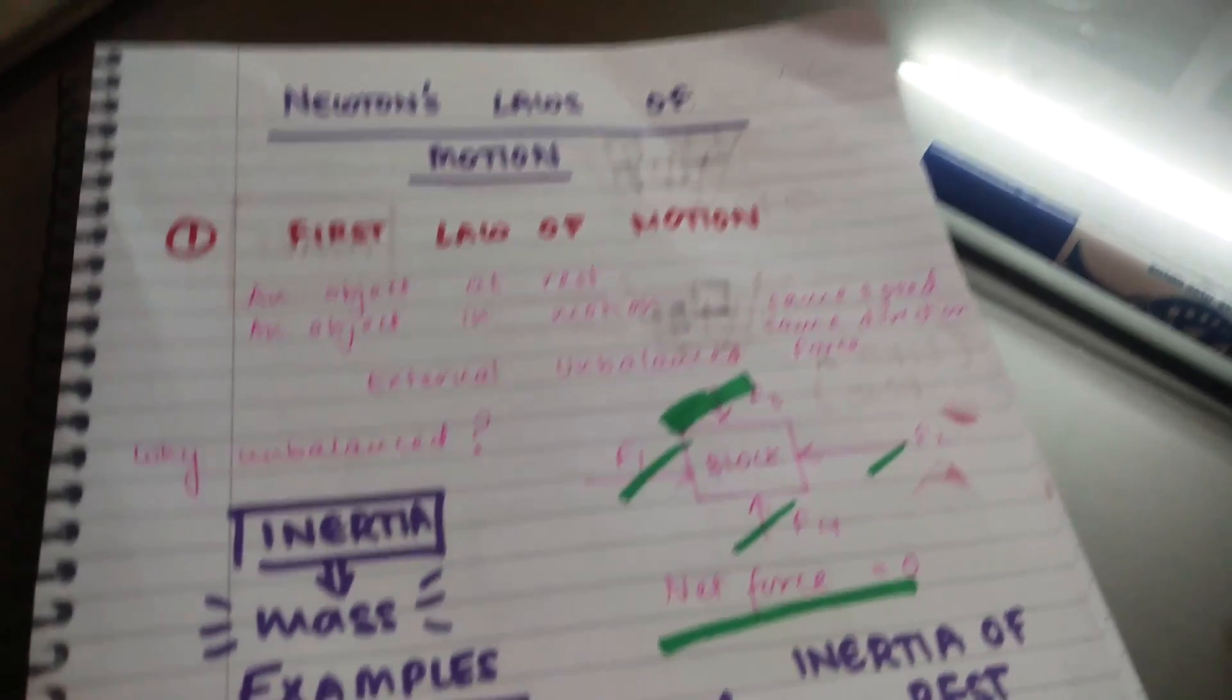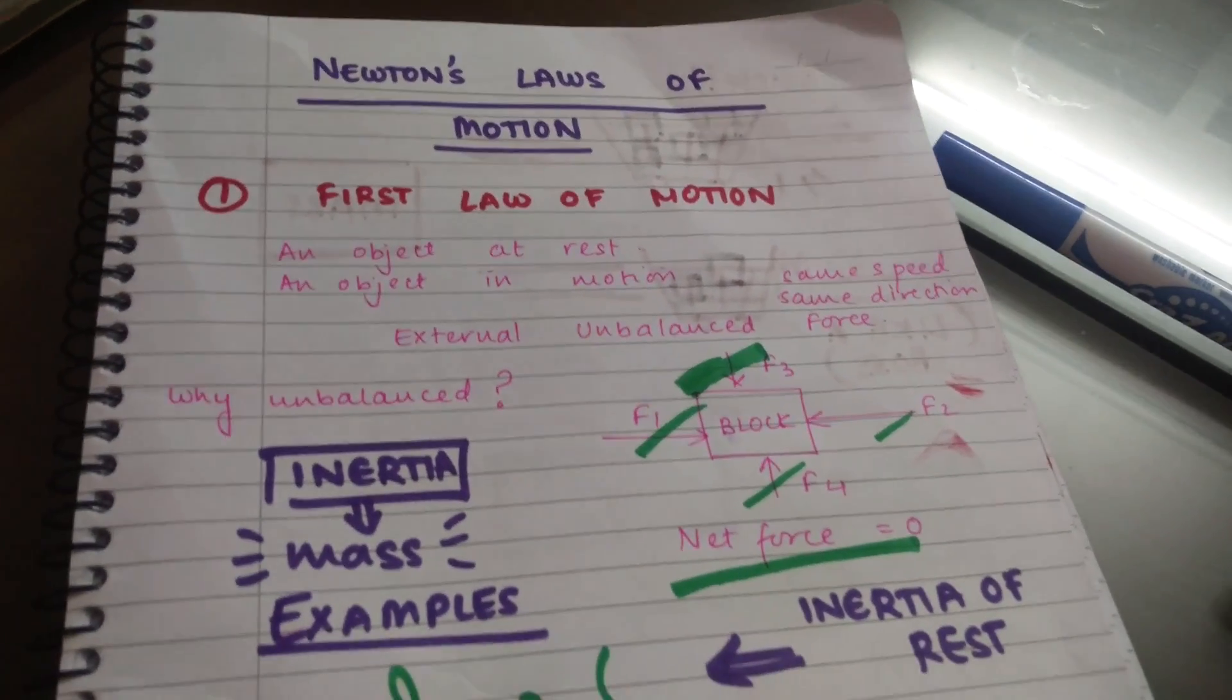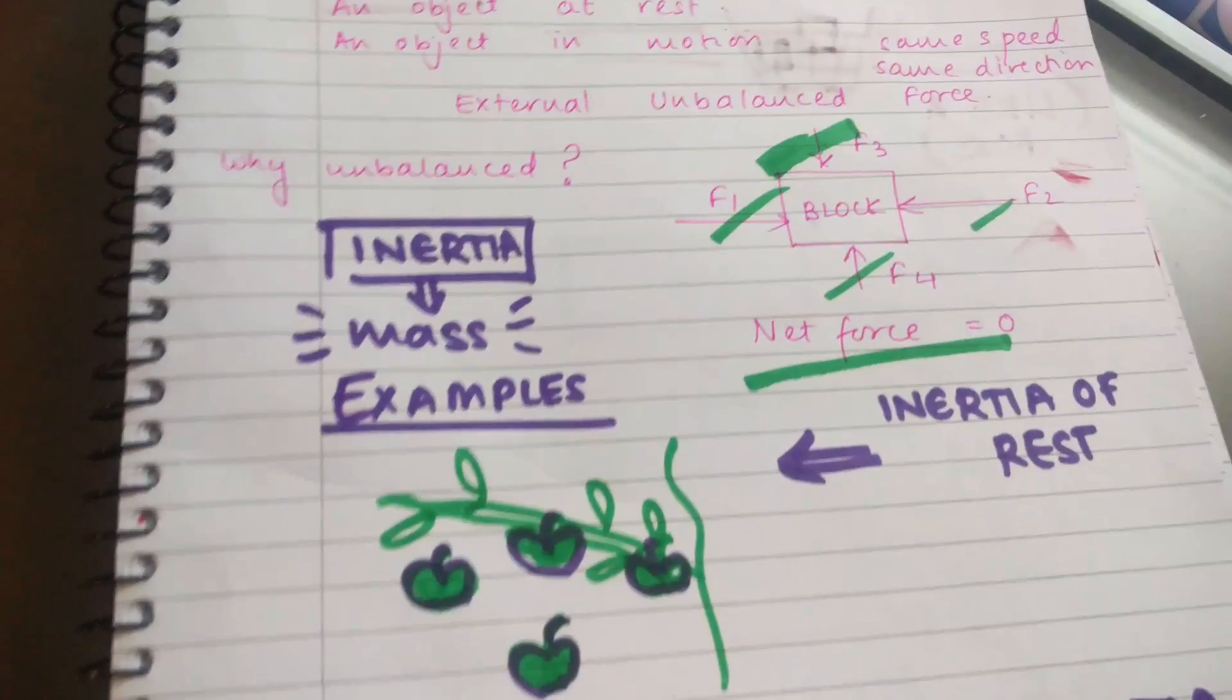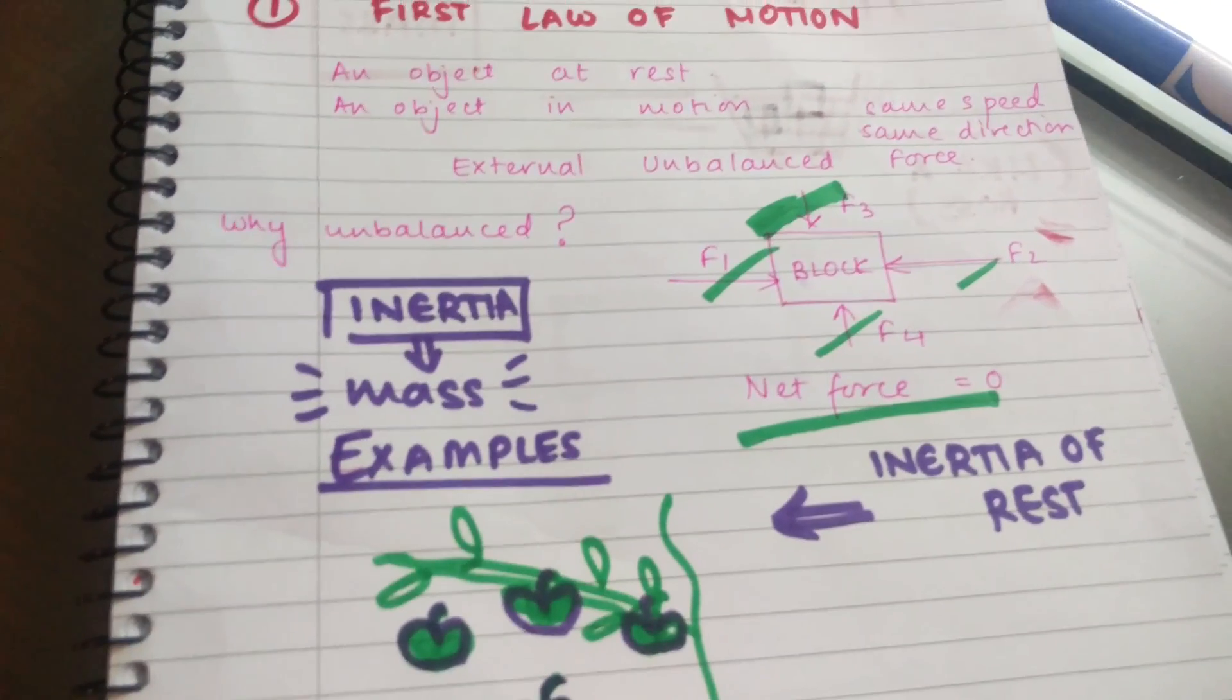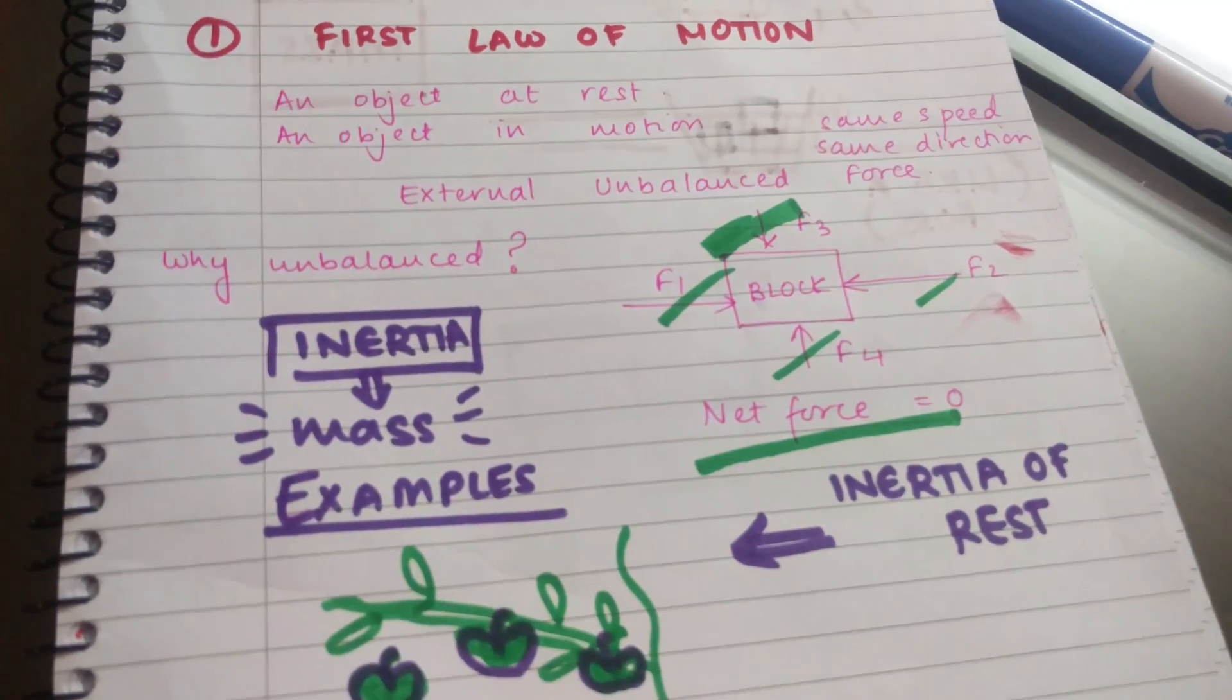We're going to continue our discussion about Newton's first law of motion. We were talking about inertia. Inertia is nothing but the tendency of a body to remain in the state that it is in.